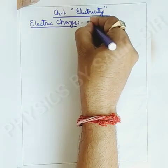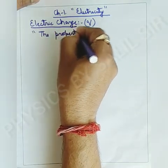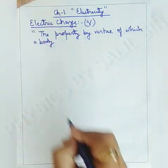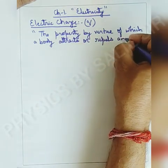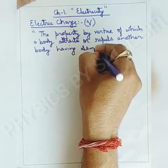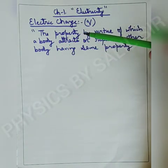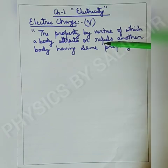Electric charge is represented by small q. The definition is: the property by virtue of which a body attracts or repels another body having the same property. This means if there is a body which has the property to attract or repel another body, then this property is known as electric charge.